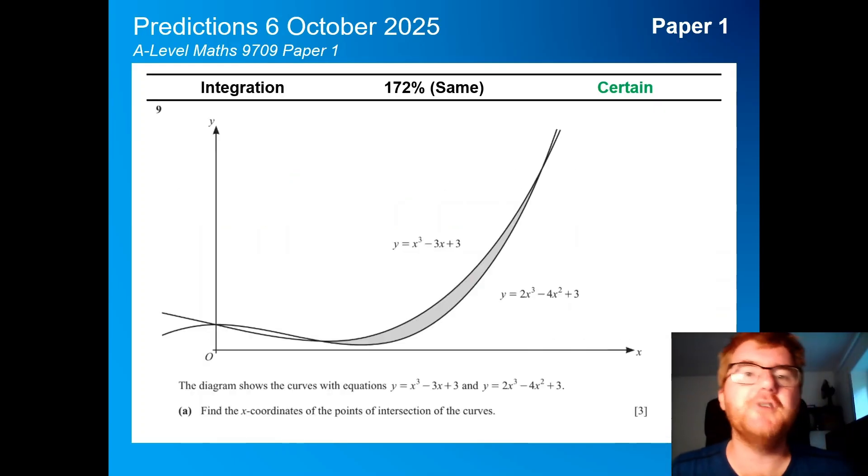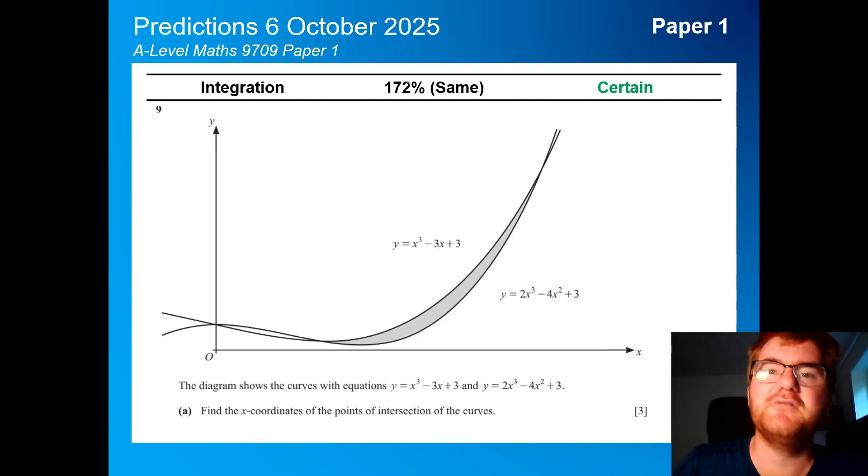On to the big two topics, integration is the first one, at 172%. Not a surprise, it usually comes up once, mostly twice on the exam. Usually the more difficult questions. This is very typical, so you have to find the x-coordinates of the points of intersection, and then use that to work out the area of the shaded part.